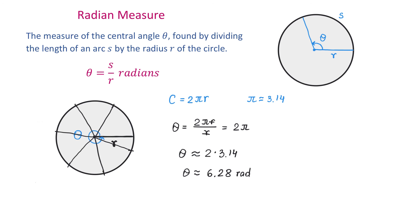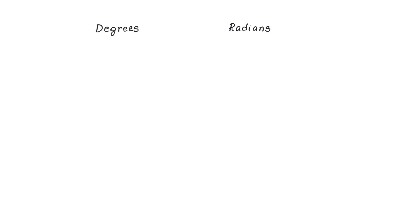When working with degrees and radians, we use different symbols. When measuring angles in degrees, we write the number followed by a small circle representing the degree symbol — for example, 5 degrees. When measuring angles in radians, one symbol we can use is 'rad', for example 5 rad. We may also write 5 with no symbol at all, which also means 5 radians — when there is no symbol, it is assumed the number represents radians. We can also write 5 radians as a complete word. All these notations are acceptable for radians, but when working with degrees, we must always use the degree symbol.